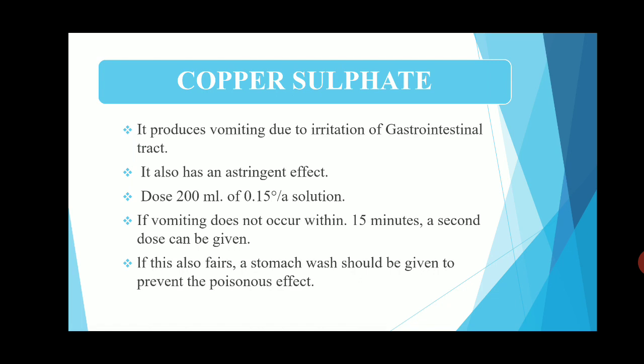The third drug is copper sulphate. Copper sulphate also produces vomiting due to irritation of the gastrointestinal tract. It also has an astringent effect. The dose of copper sulphate is 200 ml of 0.15% solution. If vomiting does not occur within 15 minutes, a second dose can be given. If vomiting still does not occur, a stomach wash should be given to prevent poisonous effects.